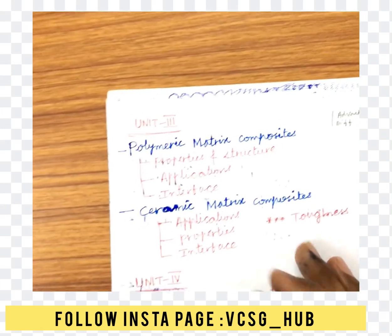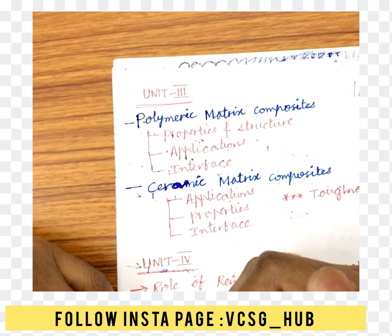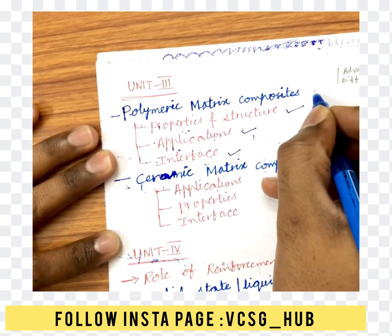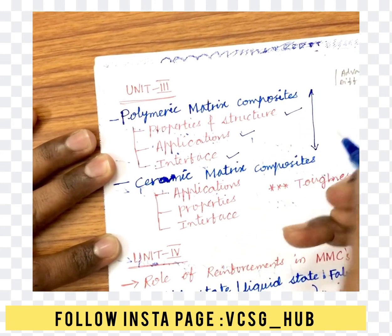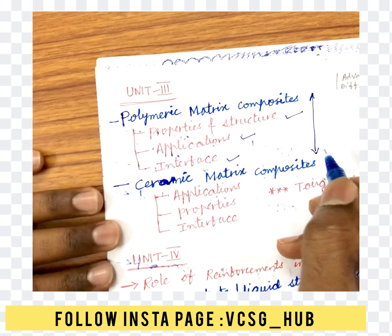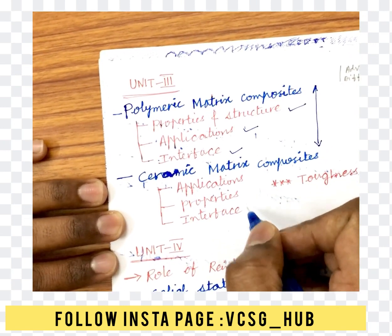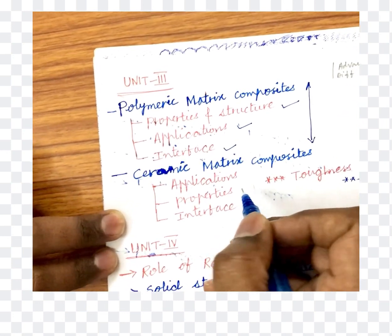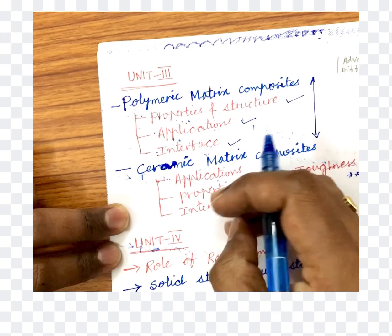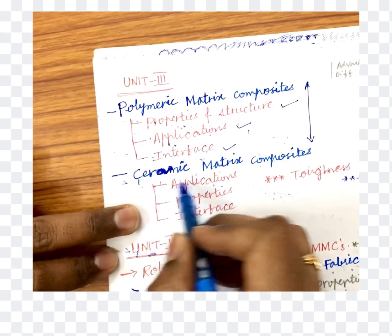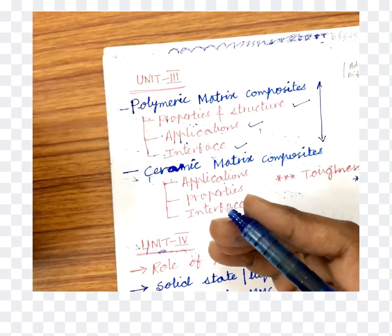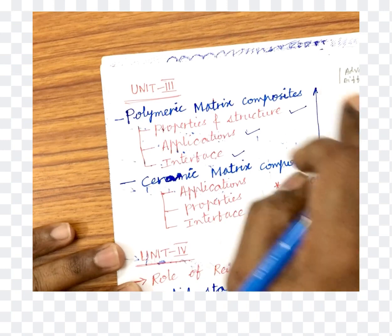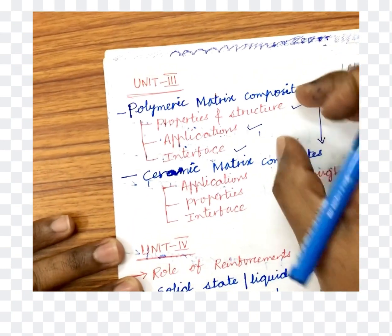Moving to Unit 3, which is very important. A student studying Unit 3 should also study Unit 4. It covers polymeric matrix composites — their properties, structure, and applications. The interface is an important guaranteed question, likely the fourth question in the exam. Ceramic matrix composites, their applications, properties, interfaces, and toughness are also 5-mark questions. Questions may not be direct — they may ask advantages, differences, or applications comparing polymeric and ceramic matrix composites. Make sure to study both topics.